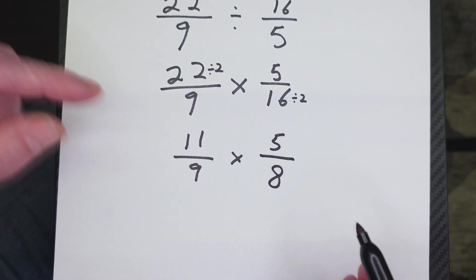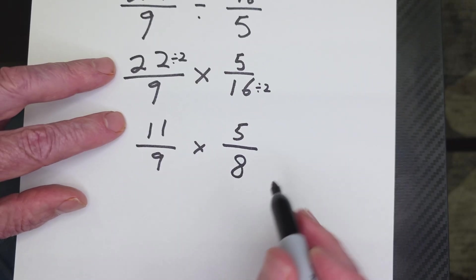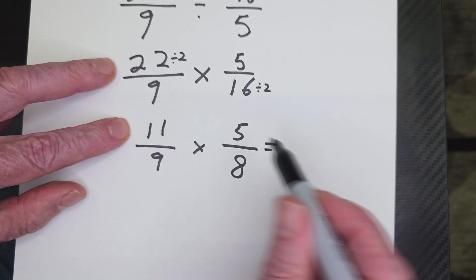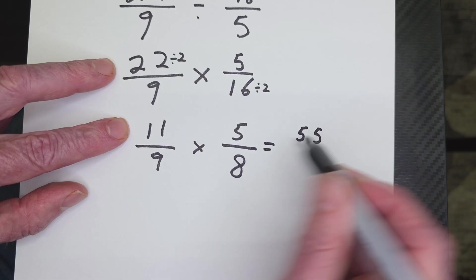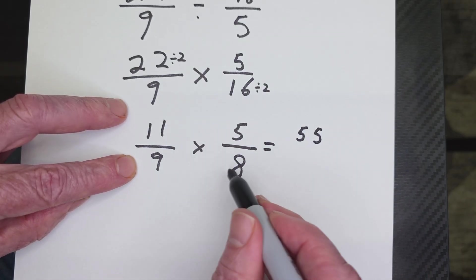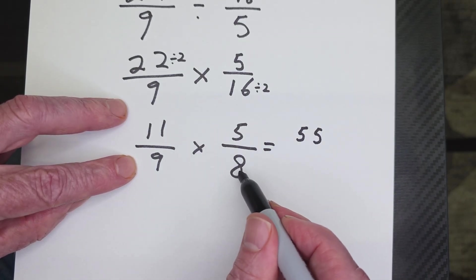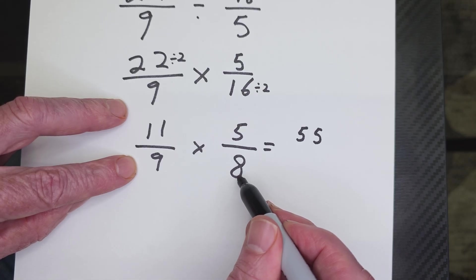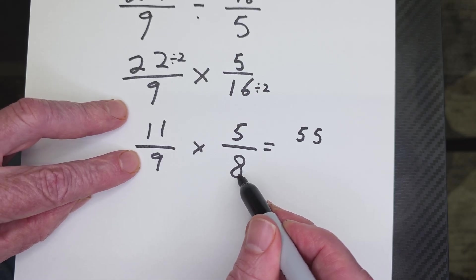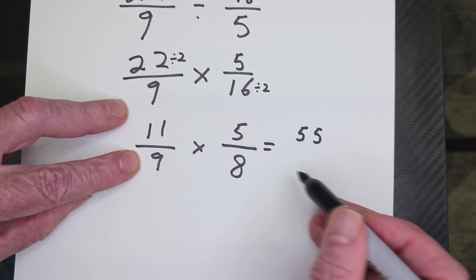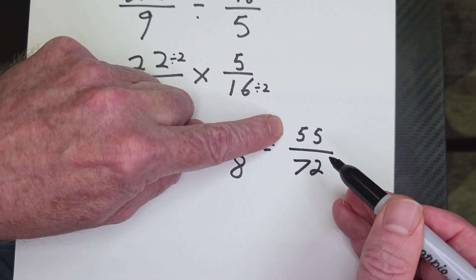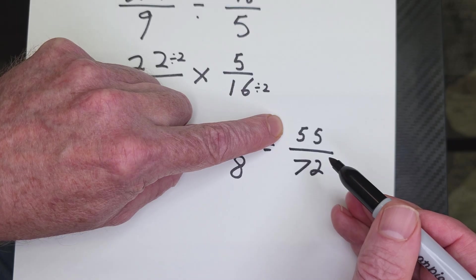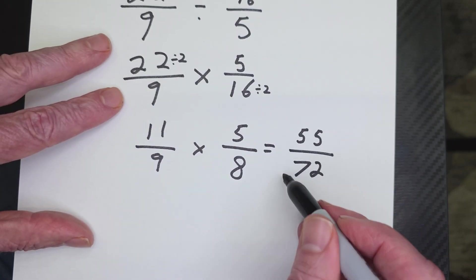Can I do any more simplifying? No, you cannot. So now I'm going to go ahead and multiply it straight out. 11 times 5, 55. And then 9 times 8. You know that trick with nines? 1 less than 8 is 7. What plus 7 equals 9? 2. So it's 72. 9 times 8, 72. Take a look at that. Is that an improper fraction? No, it's a proper fraction. You can go to the party.